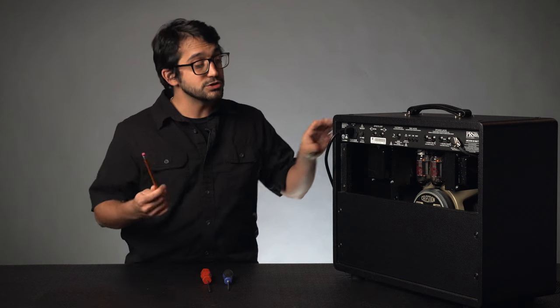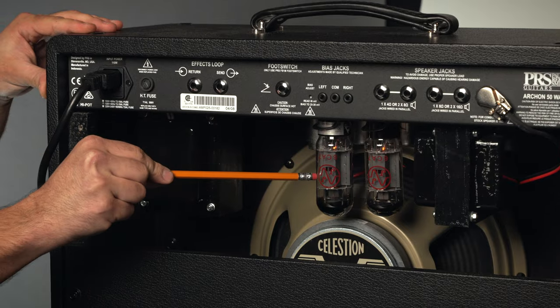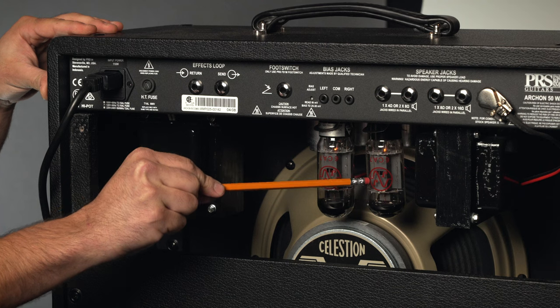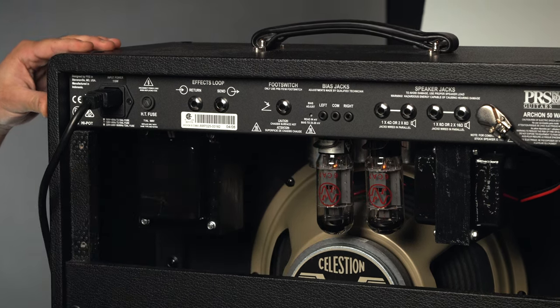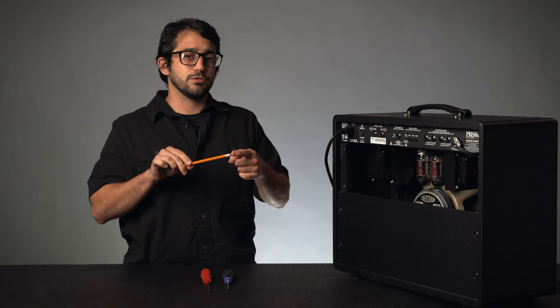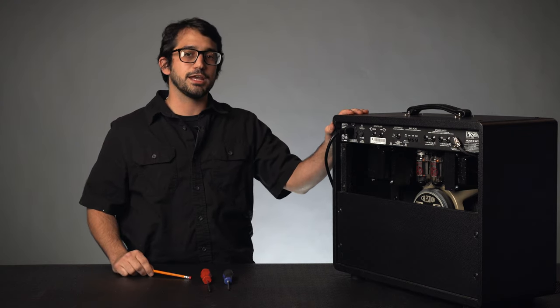If you can reproduce the problem, you can take an eraser on a pencil and you can simply touch the tubes, power tubes and preamp tubes. Any one of these can be the cause of the vibration, and when you touch it with the rubber of the pencil eraser, it can dampen the vibration and get it to stop.